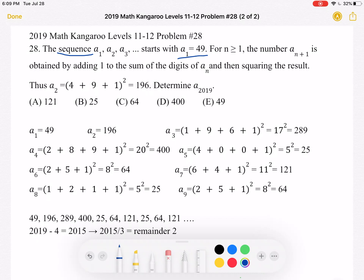We know that A1 equals 49, and we know this rule that for n greater than or equal to 1, the number an plus 1 is obtained by adding 1 to the sum of the digits of an and then squaring the result. So using that rule, we know that A2 must equal 196.